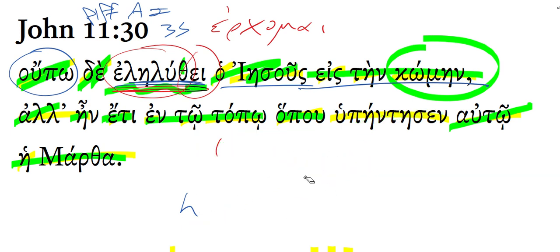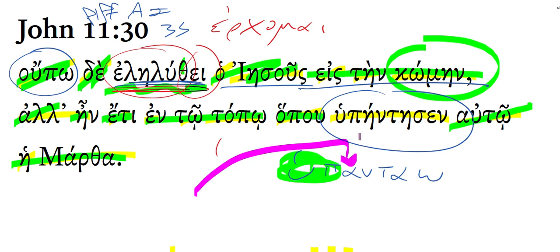This verb right here, hupainteson, that comes from the lexical form hupantao. As soon as we write that out, we say, oh yeah, that's one of those compound verbs. It has a prepositional prefix. So I know the augment will come here. Indeed, it does. There's your augment. There's the sigma. Bam!